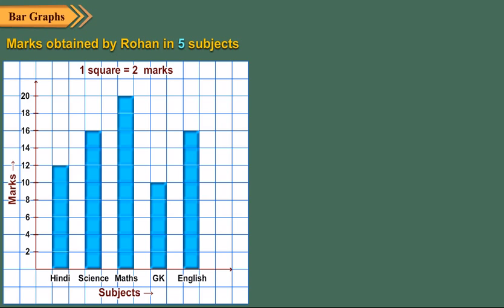The title of this bar graph is Marks Obtained Out of 20 by Rohan in 5 Subjects. Here along the horizontal line or axis, subjects are marked and along the vertical line or axis, marks are marked.